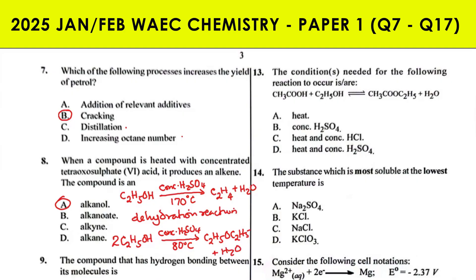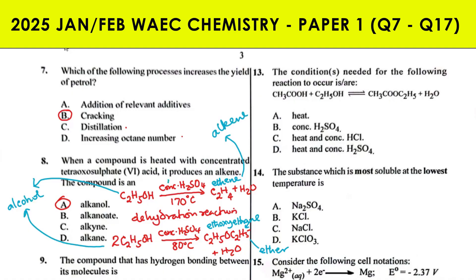So alcohols undergo dehydration reactions with concentrated H₂SO₄ in two different ways. One product is ethene, which is an alkene. The other product is ethoxyethane, which is an ether — also called an alkoxyalkane. The difference between the two reactions is that here the acid is in excess, whereas in the other reaction the alcohol is in excess.